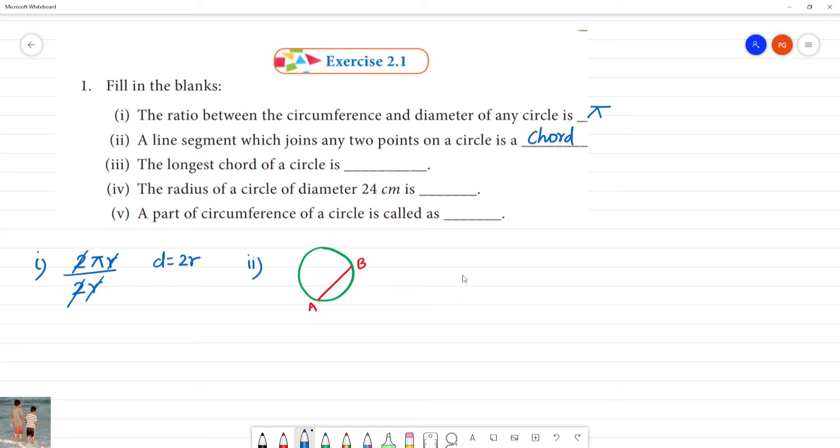The longest chord of a circle is... Now we have a circle. In this circle, we have a chord here. We will have diameter here. This is the biggest chord. The longest chord of a circle is its diameter. If you have a diameter of a circle, this length is less. So this is the longest chord.